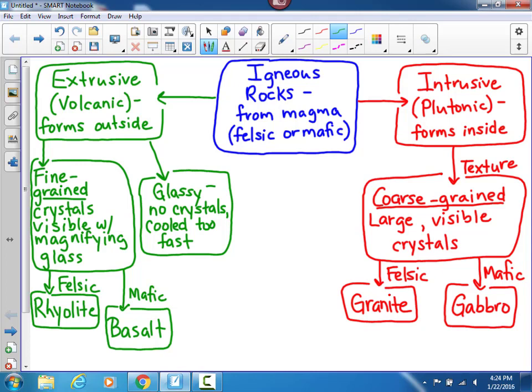There is one glassy rock that you'll see in your lab. And it is felsic, even though it's dark-colored. It is dark, dark-colored, but it is still made from felsic lava. And that is obsidian.